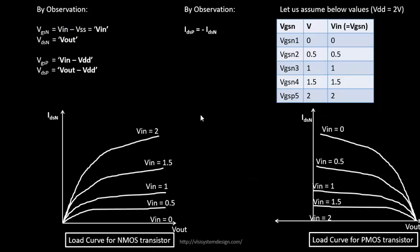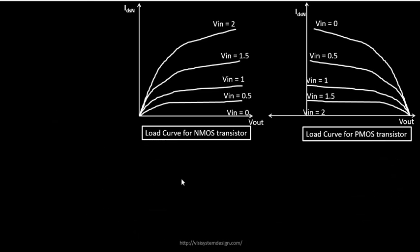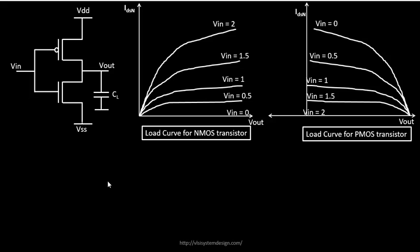The final step is to take these two load curves — PMOS and NMOS — and merge them to get the voltage transfer characteristics of the CMOS inverter. Since everything is now a function of Vin and Vout, it's just a matter of merging the two curves in the right fashion. We'll do that in the next video. Thank you.